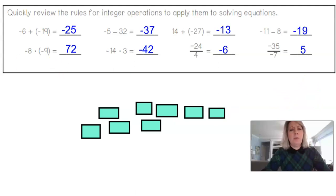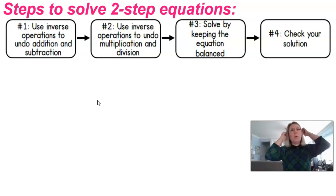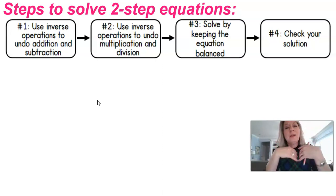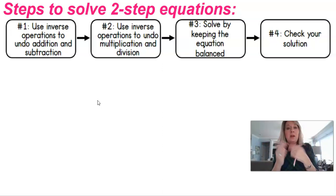Hopefully you're getting better with those integer rules. Now, our steps to solve two-step equations — you can reference the graphic organizer from our previous lesson. It may involve the distributive property or combining like terms. Once all variables are on one side, use inverse operations to undo addition and subtraction first, then undo multiplication and division. Show your work, keep the equation balanced on both sides of the equal sign, and check your answer by substituting back into the original equation.